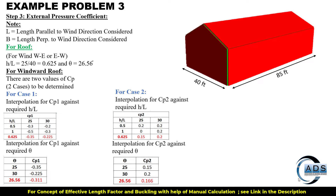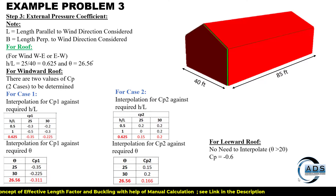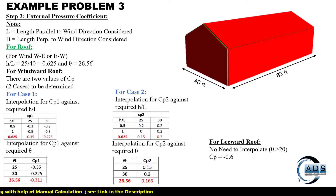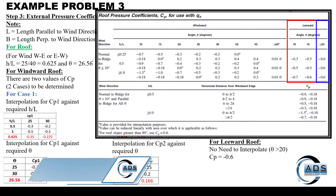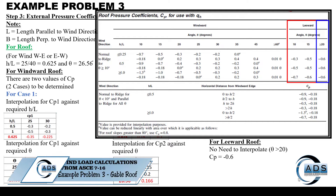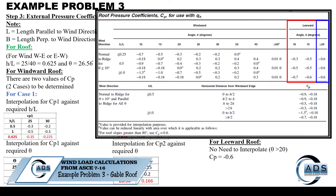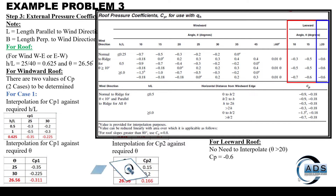For case 2 these are the values. For the leeward roof, since theta is greater than 20 degrees, the Cp value is minus 0.6. In the leeward section, if theta is greater than 20 degrees there is no need for interpolation because all the values are the same.